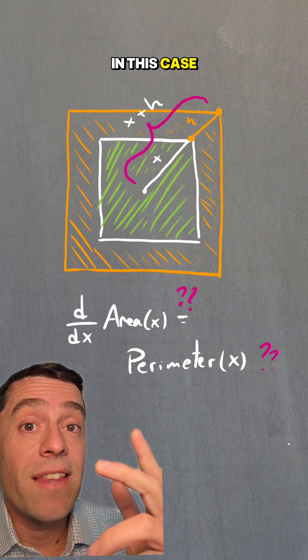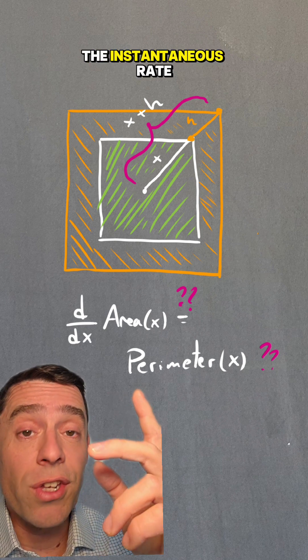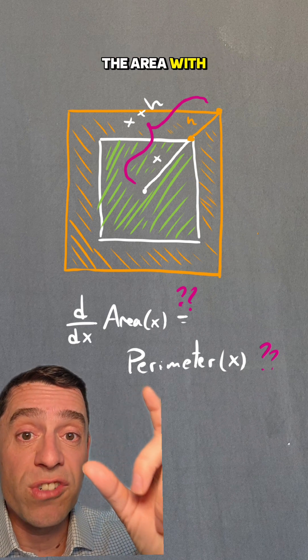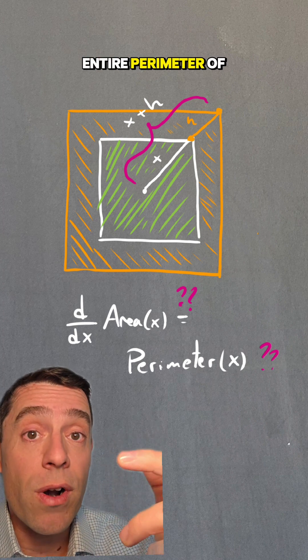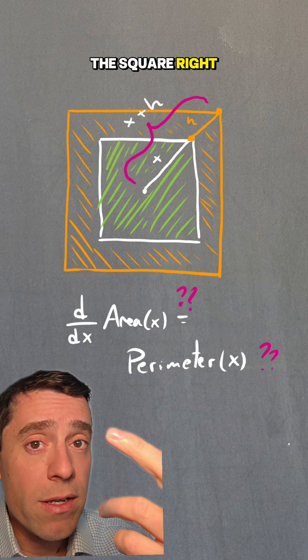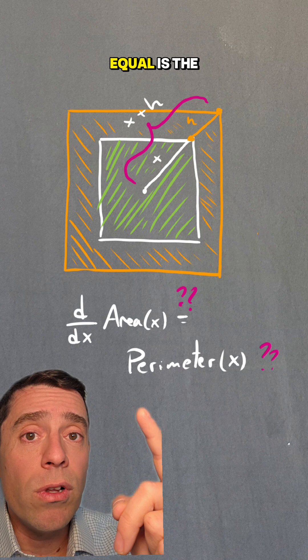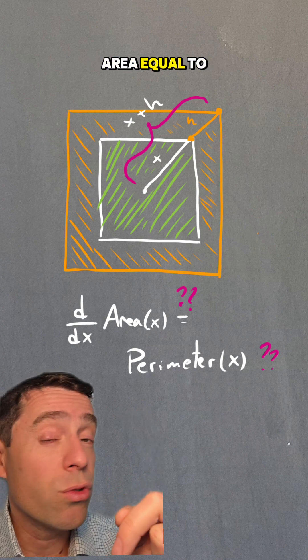It would seem in this case that yes, the instantaneous rate of change of the area with respect to x, with respect to the semi-diagonal, should be the entire perimeter of the square, right? So is that equal? Is the derivative of the area equal to the perimeter?